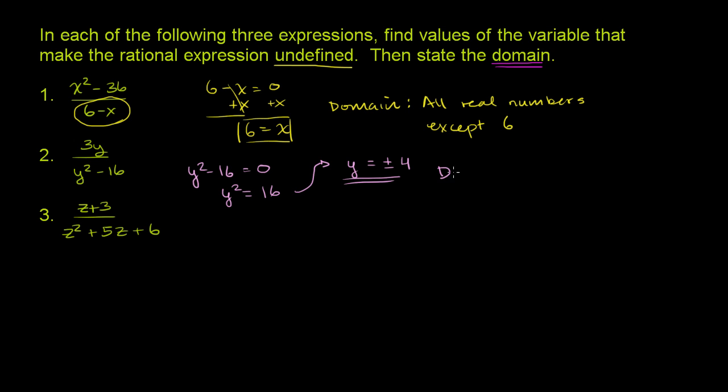Or another way of saying that, the domain here for the second problem, or the second expression right over here, or we could view this as a function definition. The domain is all real numbers except 4 and negative 4. Any other real number other than 4 and negative 4, you can put into this expression and get a valid defined value. If you put 4 and negative 4, you don't get a defined value. You get an undefined value.